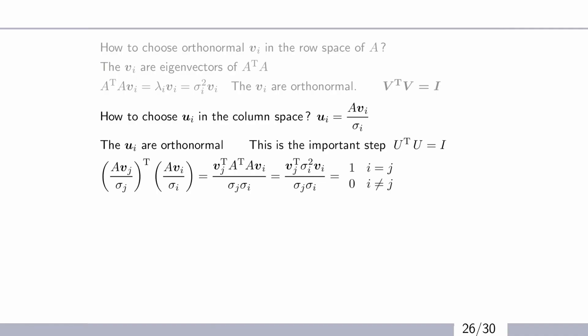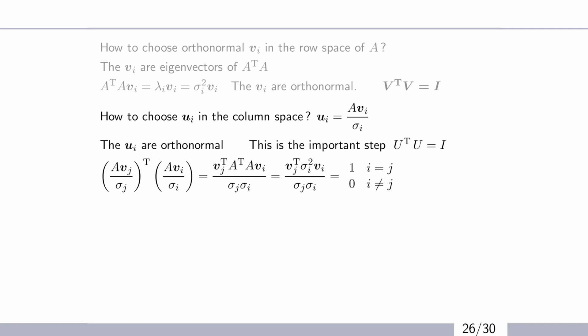And now what about the other ones? Because remember, we have two sets, the U's. Well, we just multiply by A, and we've got the U's.